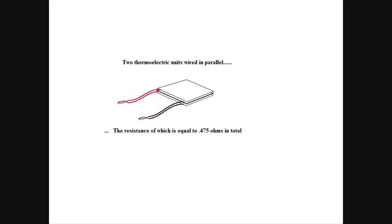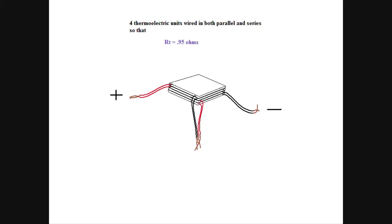So, say we take this and we double it again, except this time we're going to put the two pairs in series with each other. Now the total resistance, just like we calculated a while back, is .95 ohms. This is four thermoelectric units stacked on top of each other. Two of them in parallel, two of them in series. That way the total resistance is still the same as the original one thermoelectric unit.